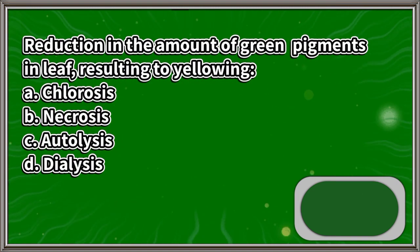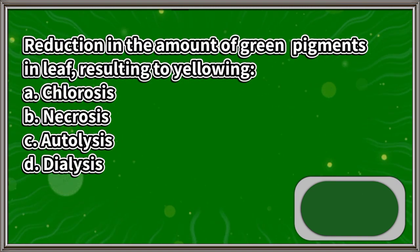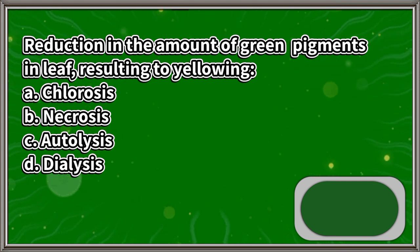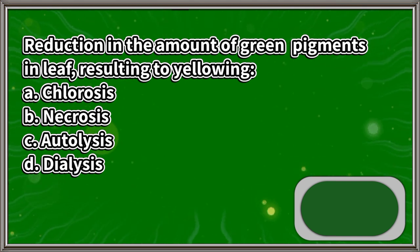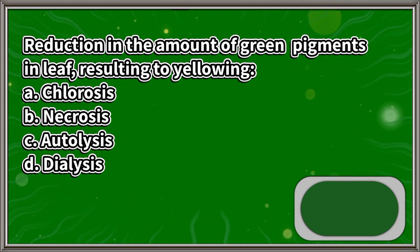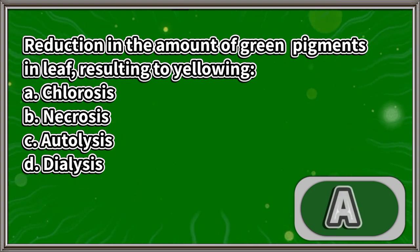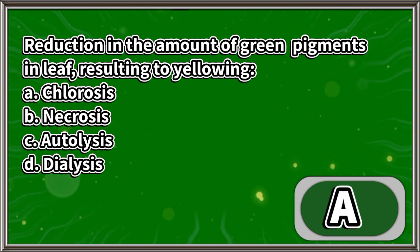Reduction in the amount of green pigments in a leaf, resulting in yellowing: A. Chlorosis, B. Necrosis, C. Autolysis, D. Dialysis. The answer is letter A.